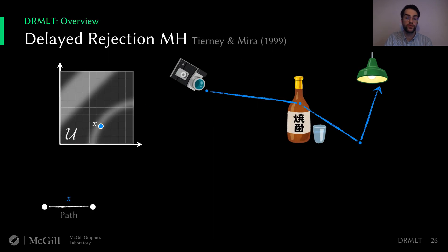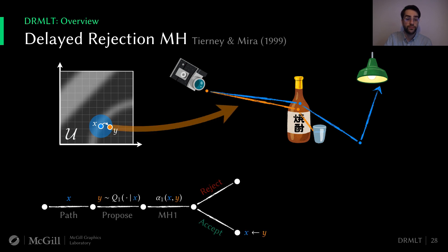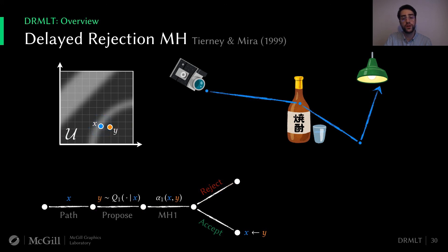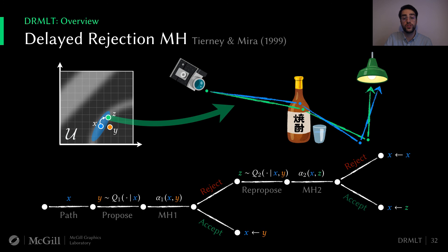Now suppose we would like to support consecutive proposals within a single Markov iteration. We cannot simply change the transition kernel on the fly without breaking the reversibility constraint — imposing different stages must somehow be accounted for in the acceptance ratio. The delayed rejection MCMC provides a mathematical framework to do so directly. The first stage is proposed using a normal Metropolis-Hastings step from some x, proposing y using a first transition kernel q1. If rejected — for instance, the path bounces off the glass and cannot reach the lamp — instead of starting over, we use a second mutation strategy to sample a third state z from a different transition kernel q2. Since this mutation strategy is hopefully better tuned to the chain's local needs, it is more likely to result in a high-contribution light path.